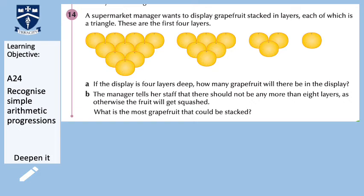Another deep-in-it style question. A supermarket manager wants to display grapefruit stacked in layers, each of which is a triangle. These are the first four layers. Part A: if the display is four layers deep, how many grapefruit will there be? Part B: the manager says there should not be any more than eight layers, otherwise the fruit will get squashed — what is the most grapefruit that could be stacked? Link it back to triangle numbers and try the question.